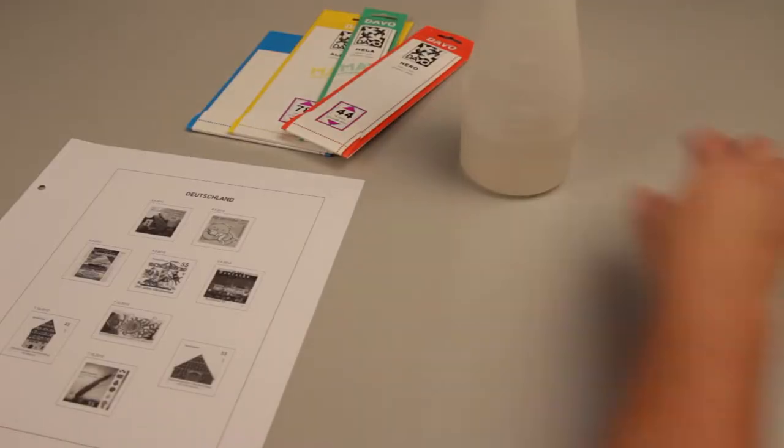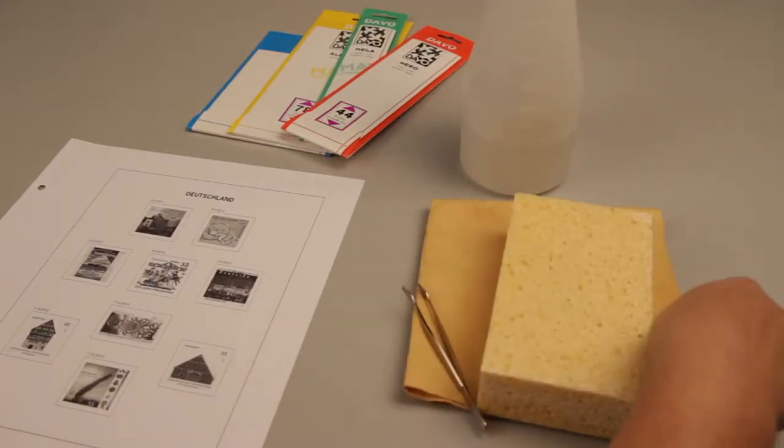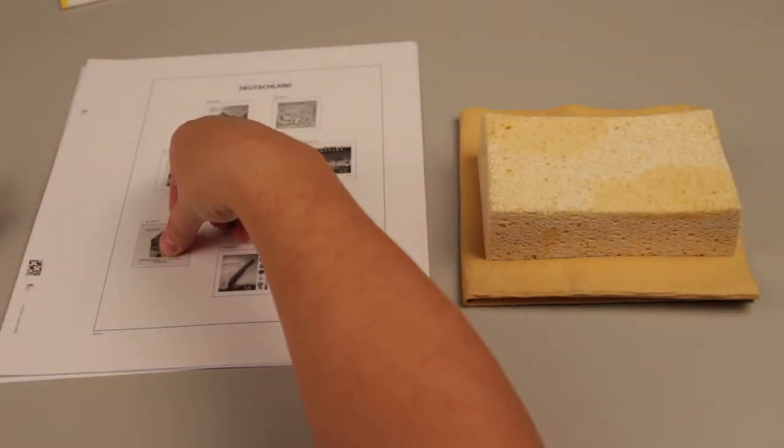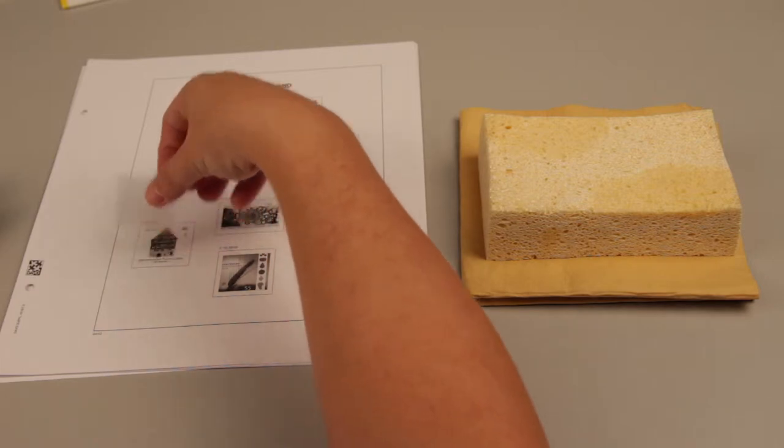Firstly, you will need a sponge or chamois and some water. But if you use too much water, the paper will buckle, and if you don't apply enough water, the mounts won't stick properly and will fall off.